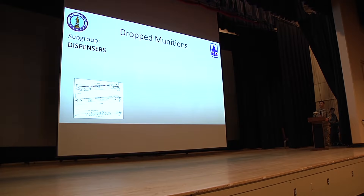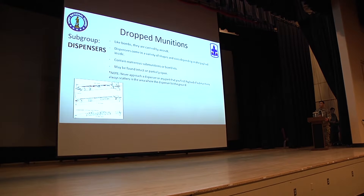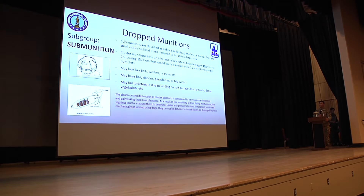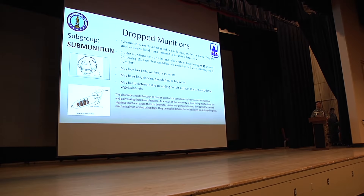Dispensers. Like bombs carried by the aircraft, dispensers come in many different shapes and sizes depending on the payload inside. They contain numerous sub munitions or bomb units. A filled cluster bomb that failed to dispense sub munitions subsequently fell apart upon impacting the ground, so you may encounter a lot of these. Sub munitions are classified as either bomb units, grenades, or mines — small explosive items designed to saturate a large area. The main group affected by cluster bombs is children, because they don't know what they are. They're about a baseball size, maybe a little smaller.